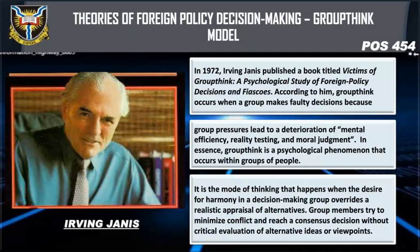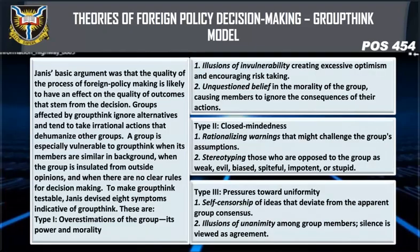Groupthink is the mode of thinking that happens when the desire for harmony in a decision-making group overwrites a realistic appraisal of alternatives. Group members try to minimize conflict and reach a consensus decision without critical evaluation of alternative ideas or viewpoints. Janis's basic argument was that the quality of the process of foreign policy making is likely to have an effect on the quality of outcomes. Groups affected by groupthink ignore alternatives.